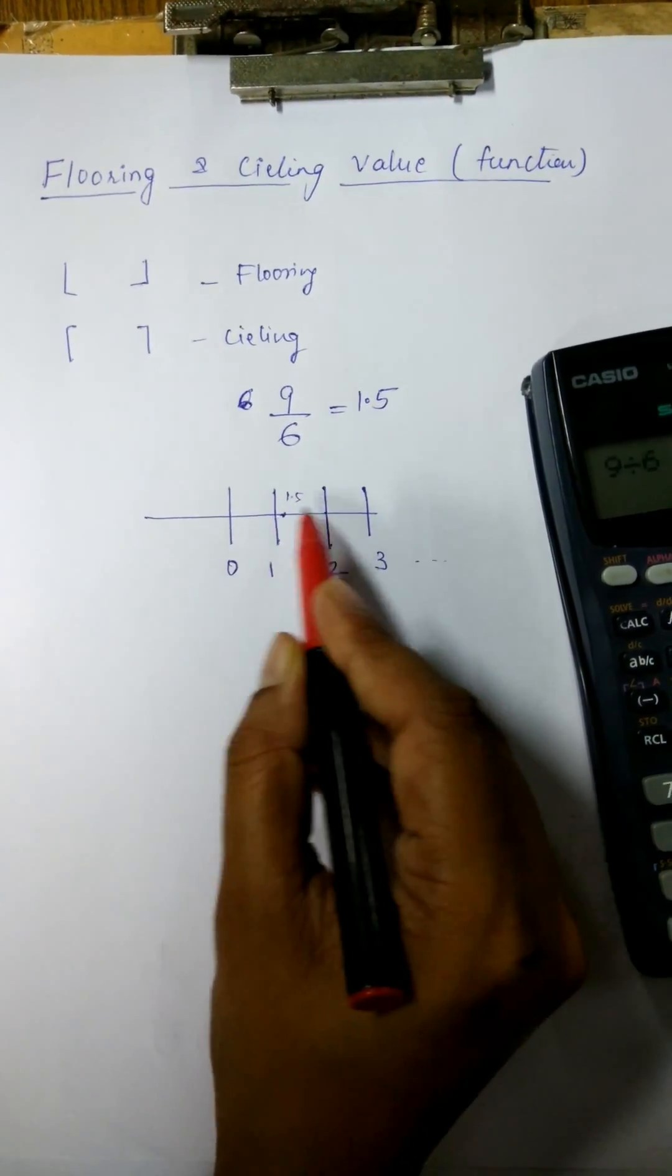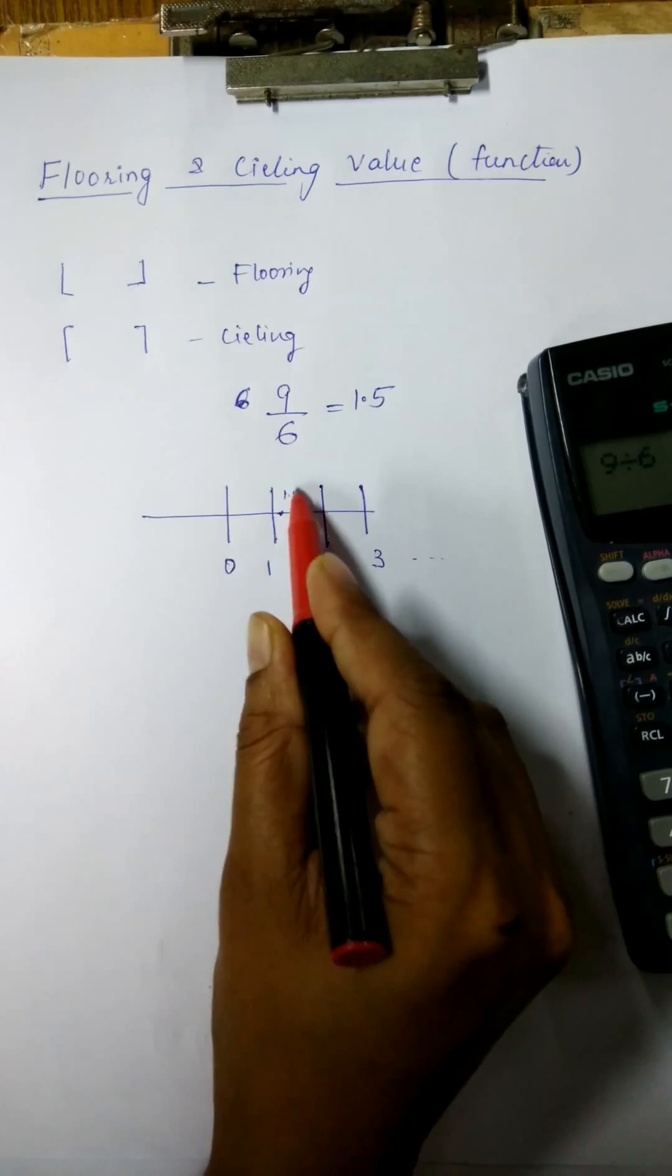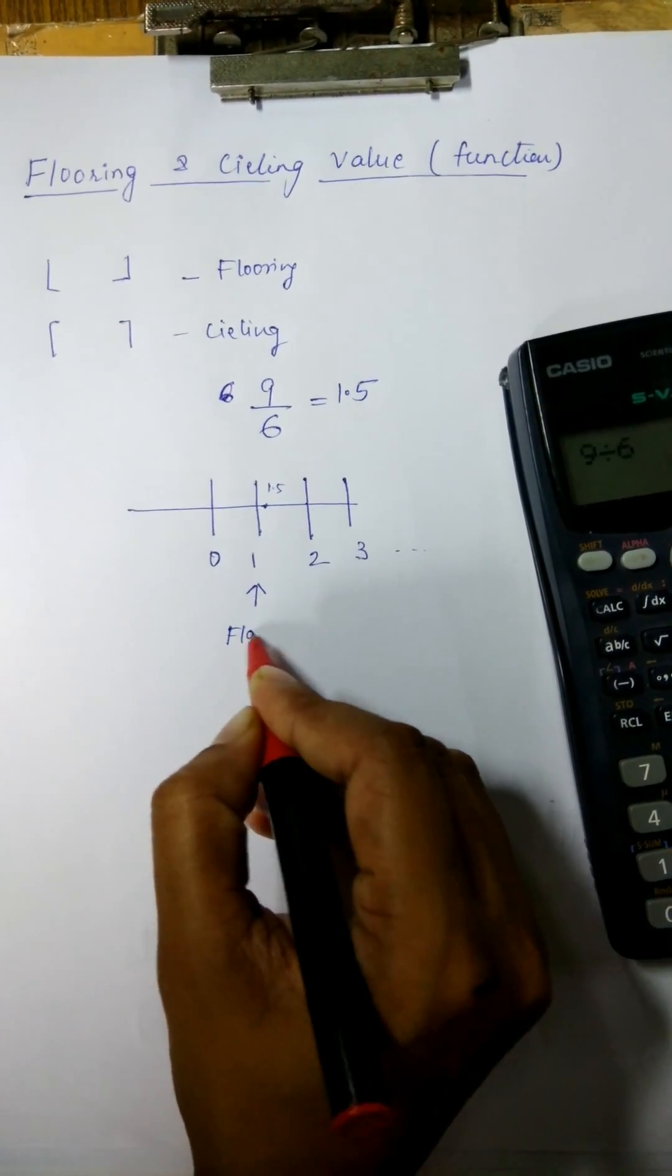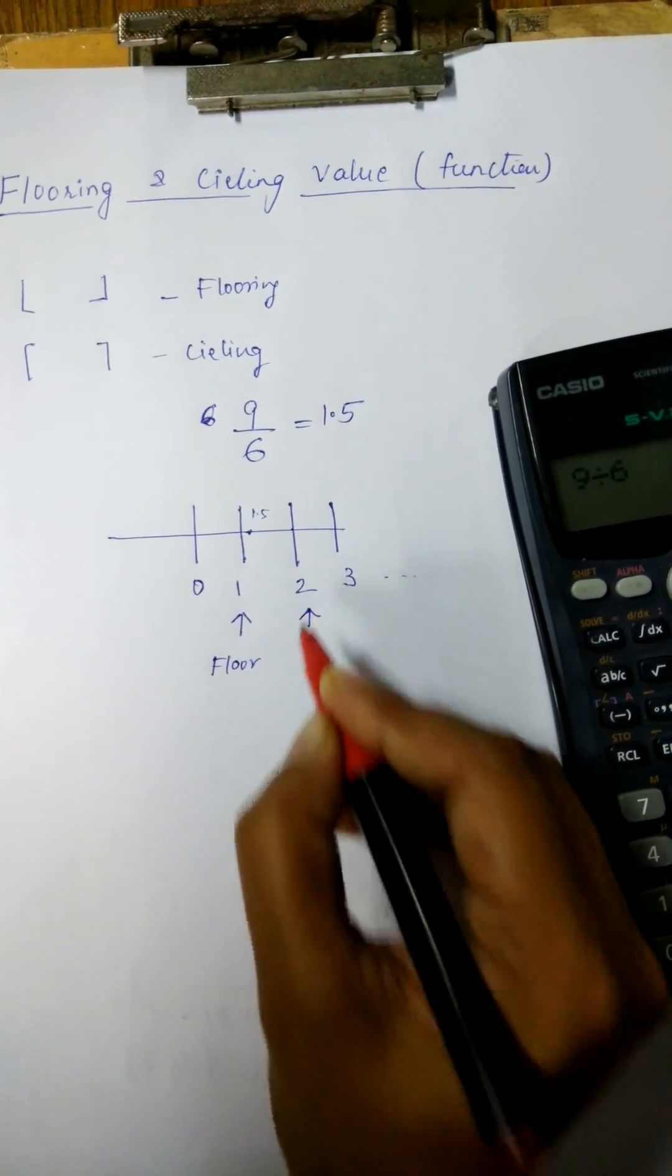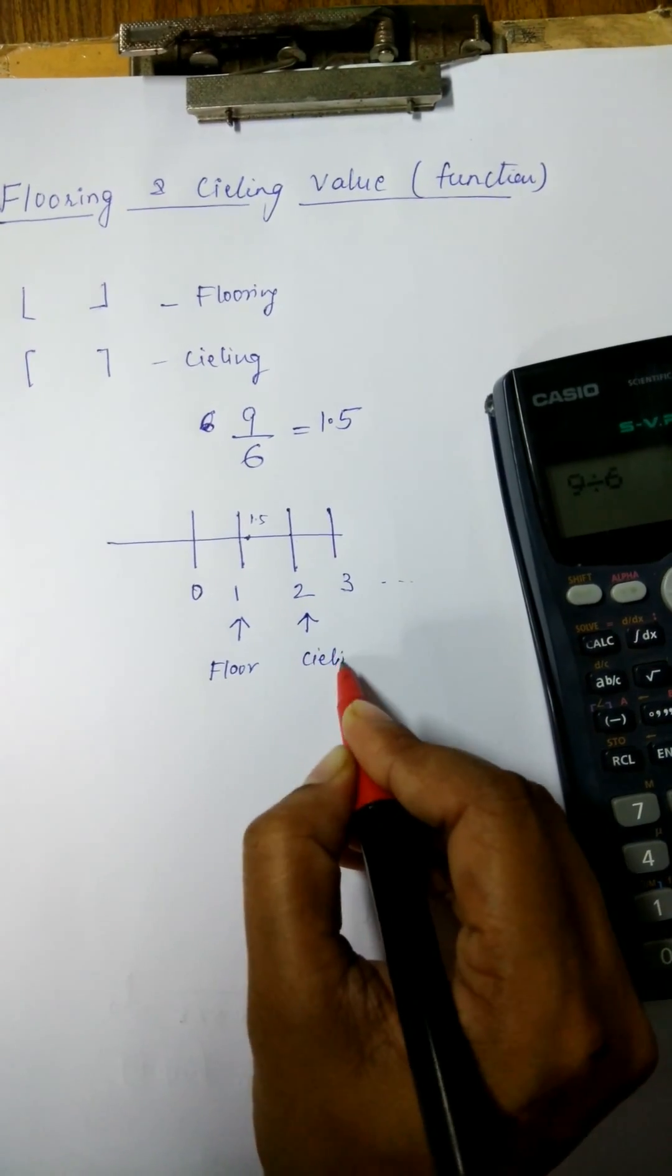So, the least value will show the flooring value. And the maximum value will show the ceiling value.